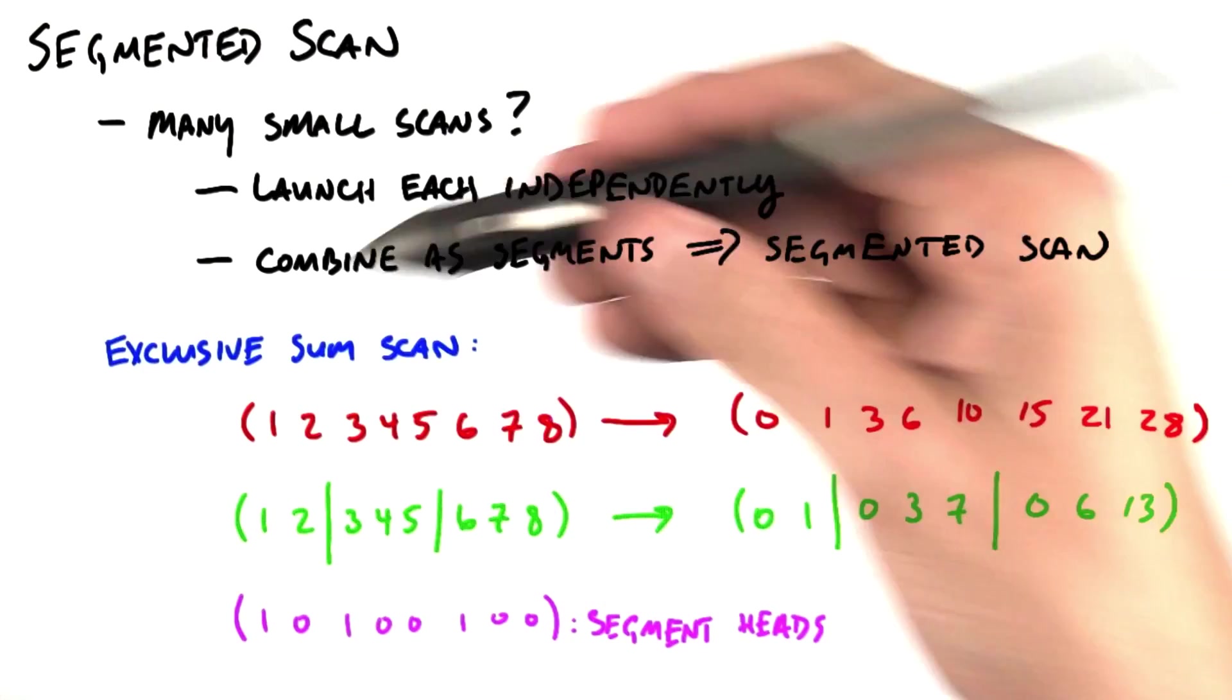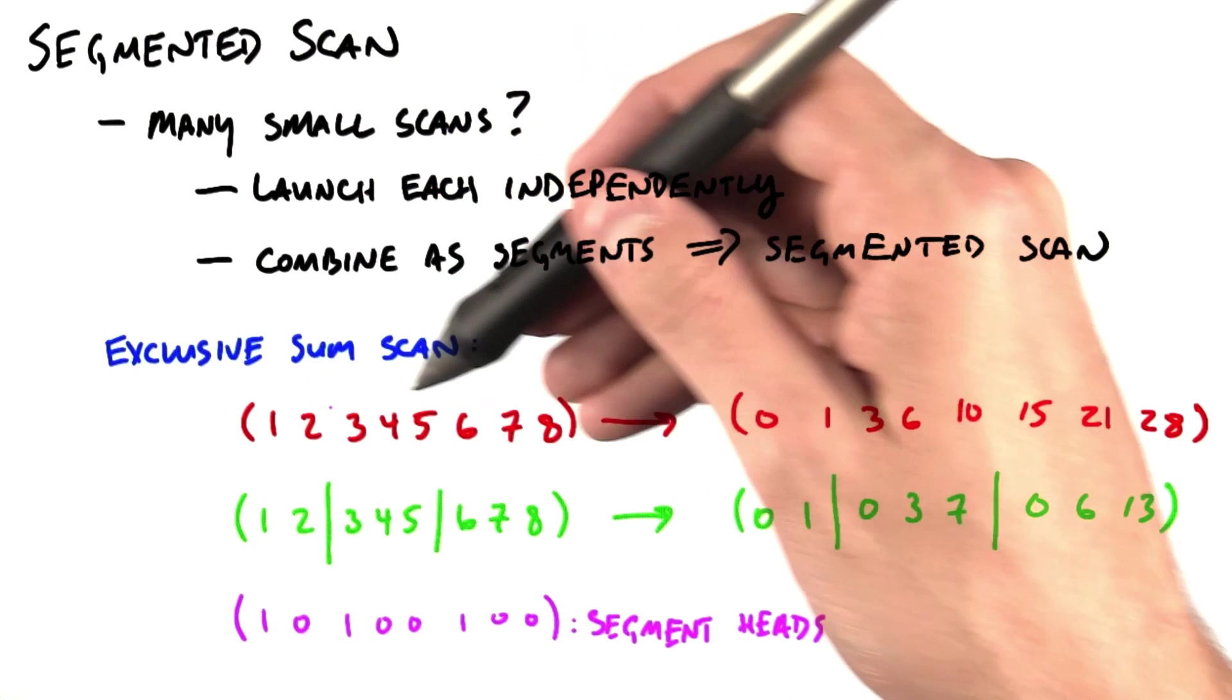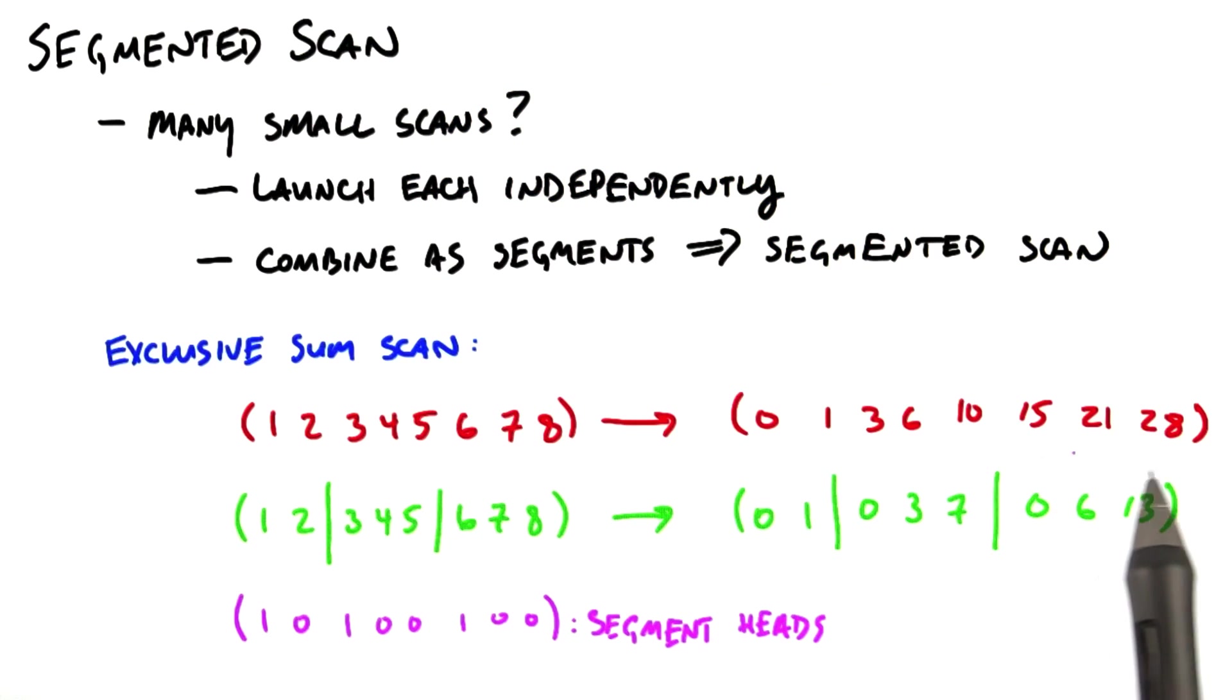Let's do an example. So if you'll recall, exclusive sum scan on an array simply takes the running sum of all elements that come before the current element. So the sum of all elements before 8, for instance, is 28.